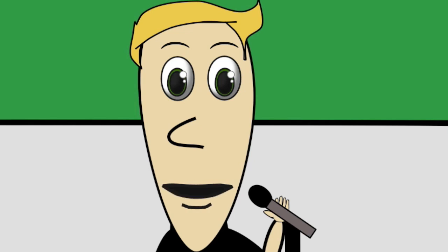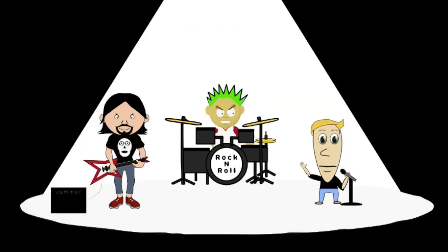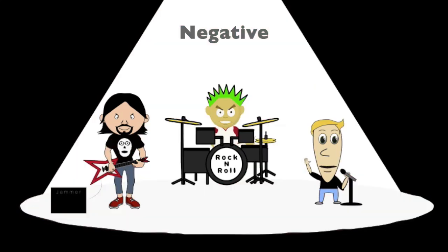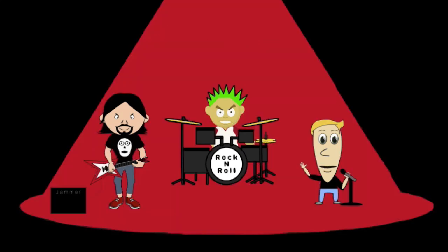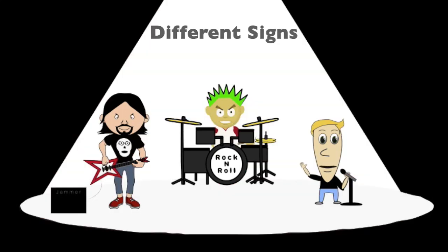Follow these two rules when you multiply or divide: same signs positive, different signs negative. Same signs positive, different signs negative.